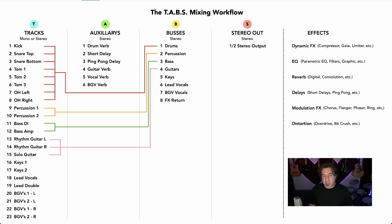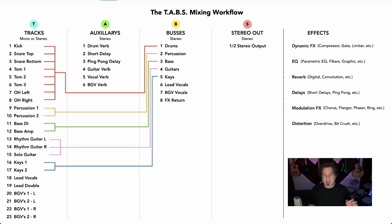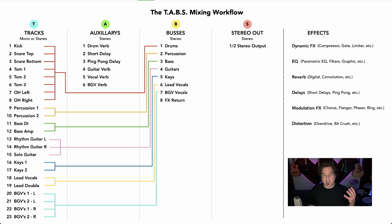Let's say I have a couple of keyboards — I'm going to assign those to a key bus. And let's say I have a lead vocal and a lead double — those will be assigned to a lead vocal bus. And then finally, let's say I have four background vocals, two left and two right — those will be assigned to a background vocal bus. That is how I'm collecting like-kind instruments together.